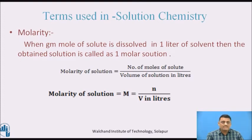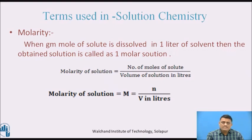Now we will see the second term, which is molarity. When 1 gram mole of solute is dissolved in 1 litre of solvent, the obtained solution is called a 1 molar solution. It is prepared by dissolving a gram mole of solute in 1 litre of solvent, either aqueous or non-aqueous. The equation is: molarity of solution = number of moles of solute / volume of solution in litre. So M = n / V (in litre), where n is the number of moles.